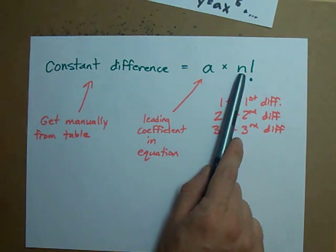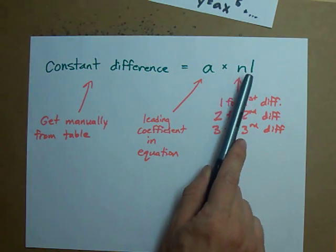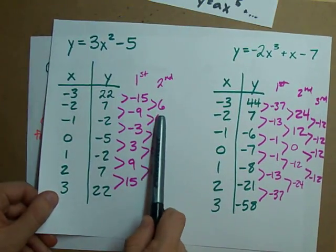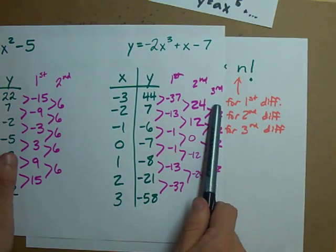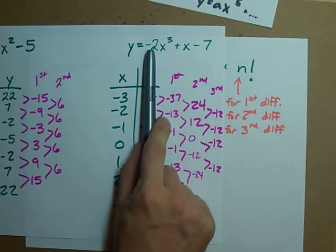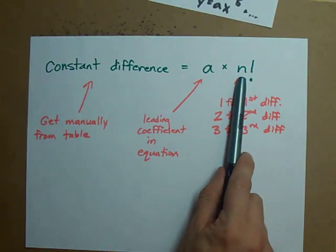Just like here, my third differences negative 12 happen to be negative 2 times 3 factorial.